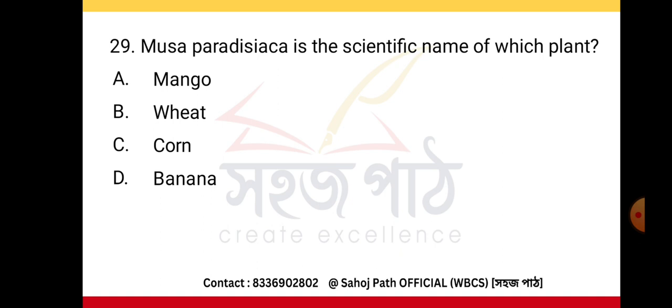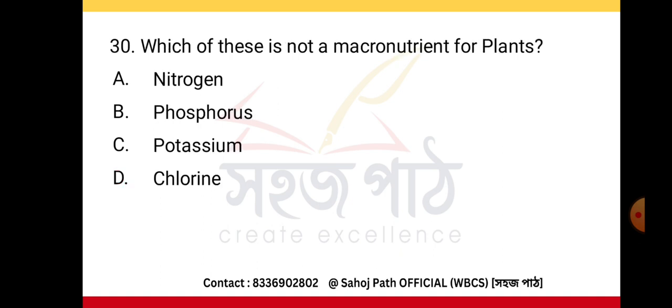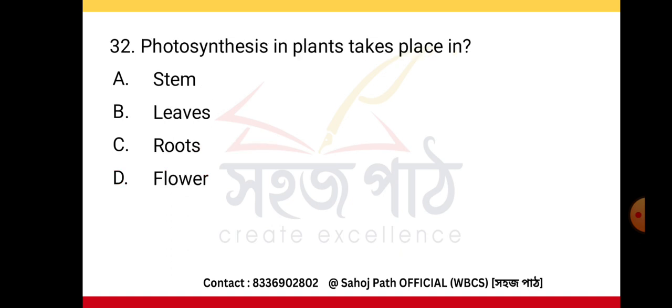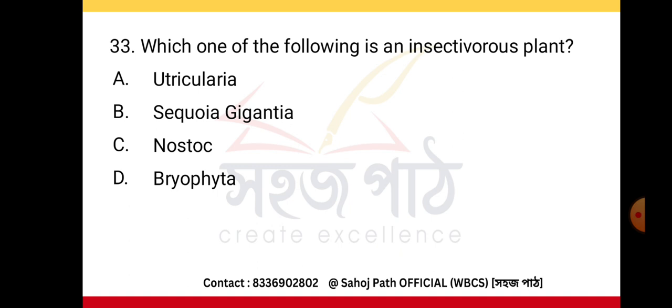Musa paradisiaca is the scientific name of banana. Which of the following is not a micronutrient for plants? Chlorine. The largest gland of the human body is the liver. Photosynthesis in plants takes place in the leaves.